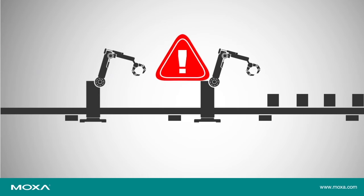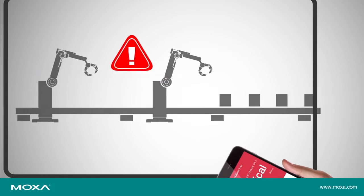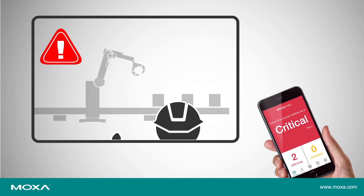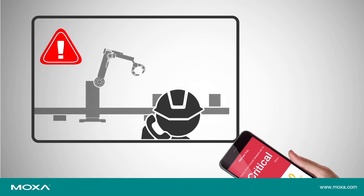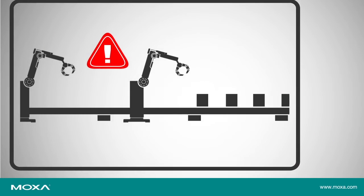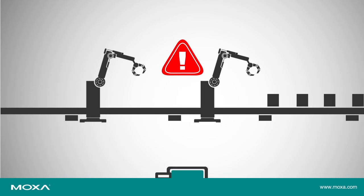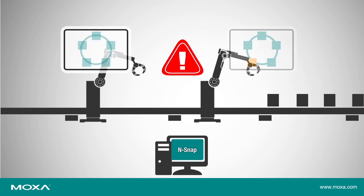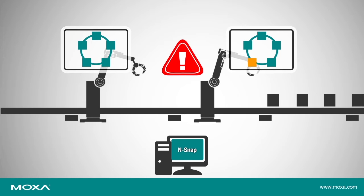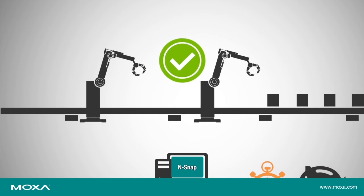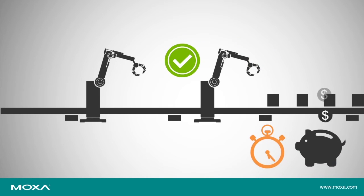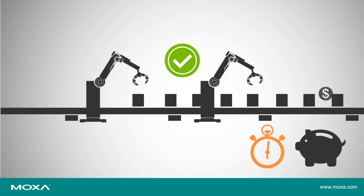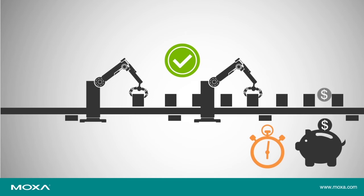When problems occur on the network, Moxa's MXView2Go mobile app will notify you right away that something is wrong. And with NSNAP, you can take a network snapshot and quickly compare it with the snapshot taken when the network was operating normally. When used together, these tools can greatly reduce downtime costs by letting you get your network back in shape as quickly as possible.